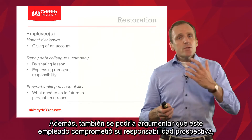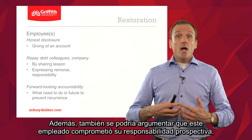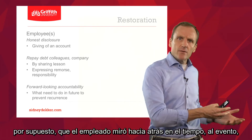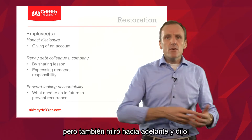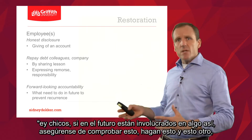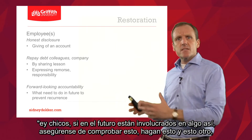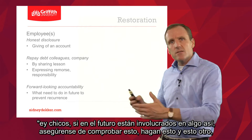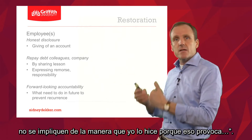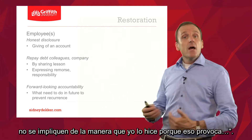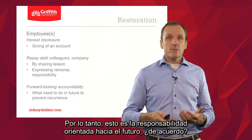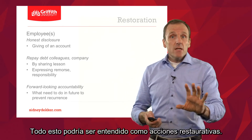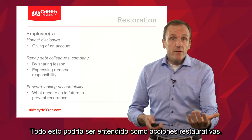You could also argue that this employee engaged in forward-looking accountability. Yes, he looked back on the event, but he also looked forward and said: 'Hey guys, if you're involved in something like this in the future, make sure you check this, do that, don't get involved in the way that I did, because...' And so: forward-looking accountability. This could be seen as restorative actions.